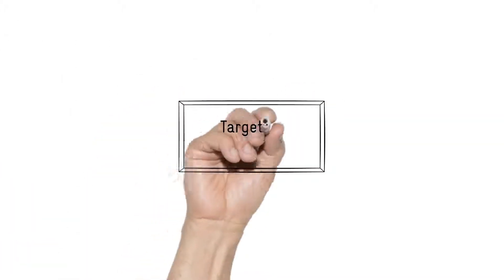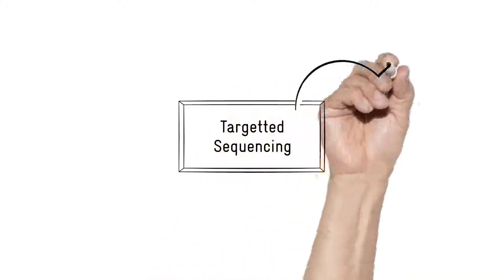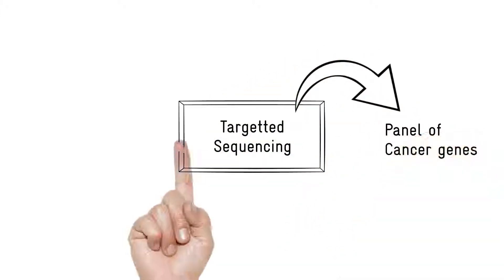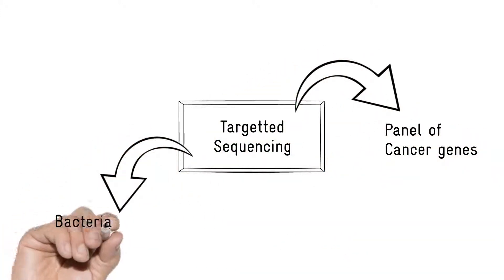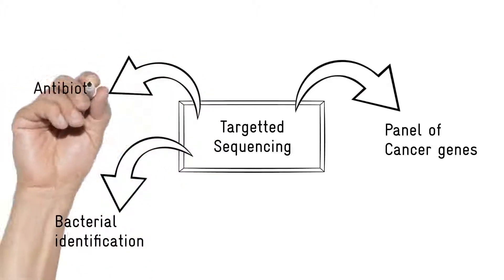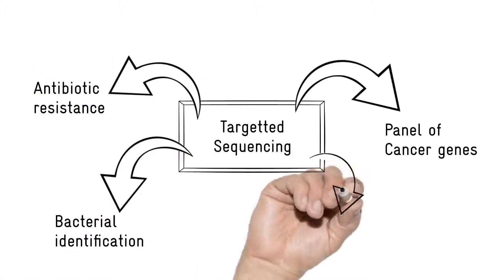Targeted sequencing can allow you to study a collection of genes associated with a cancer, for example, or it can allow you to identify particular bacteria from the genetic makeup of their 16S ribosomal RNA or endless other possibilities.